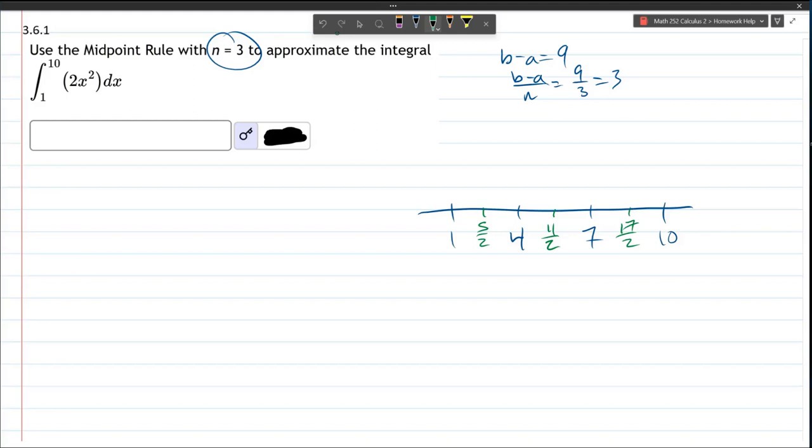Alright, this function is just 2x squared. So, it vaguely looks something like that. That's not a great graph, but good enough. And we want to get the y values right here. And that will be the height of each rectangle.